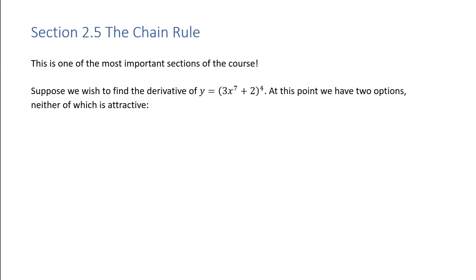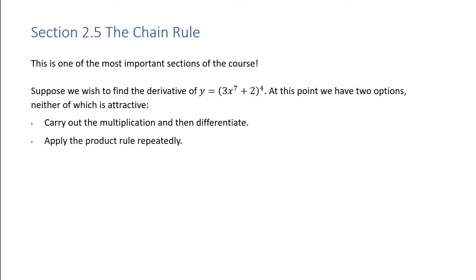Suppose we wish to find the derivative of y equals the quantity 3x to the 7 plus 2 raised to the 4. At this point we have two options, neither of which is attractive. You can carry out the multiplication and then differentiate, or apply the product rule repeatedly.